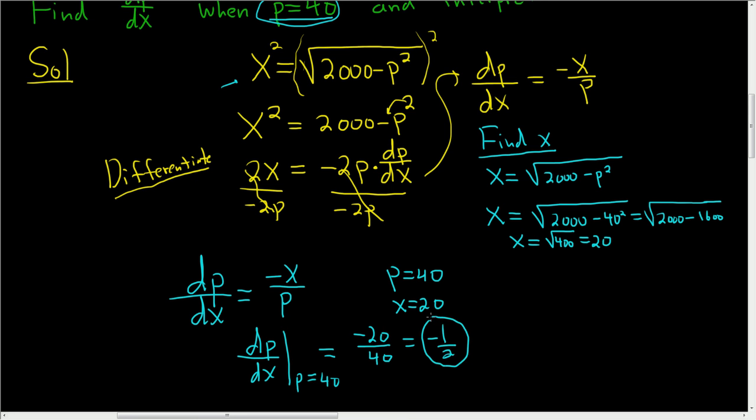So we have found dp/dx when p is equal to 40. What does this mean? This means that price decreases by about 50 cents when quantity increases by 1. Negative 0.5 is negative 1/2.